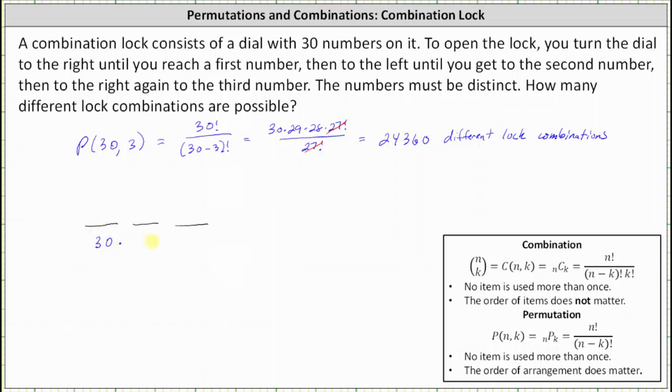The second event is selecting the second number in which there are 29 choices. Again, because the numbers must be distinct, the third event is selecting the third number, and therefore there are 28 choices.